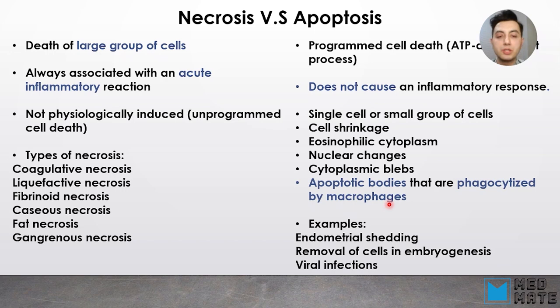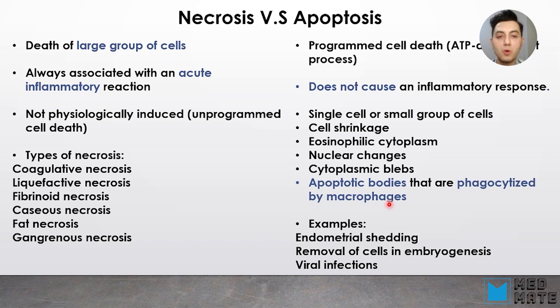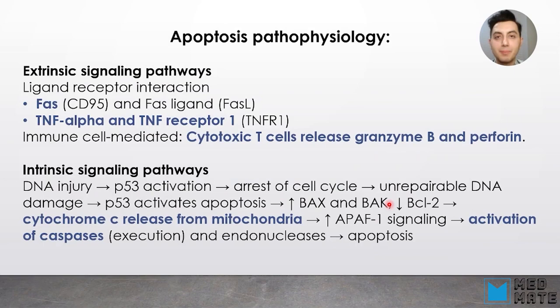Examples of apoptosis include endometrial shedding, removal of cells in embryogenesis, or viral infections. Apoptosis goes through different stages: first there is cell shrinkage, then eosinophilic cytoplasm, nuclear changes, and cytoplasmic blebs. In apoptosis we have apoptotic bodies that are phagocytosed by macrophages. There is no inflammatory response in apoptosis because of the formation of these apoptotic bodies.